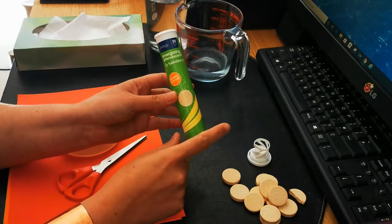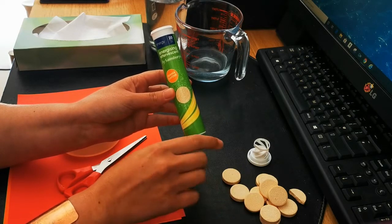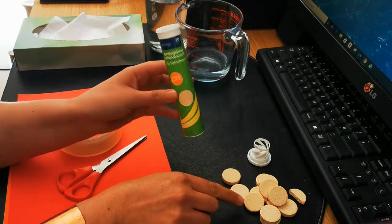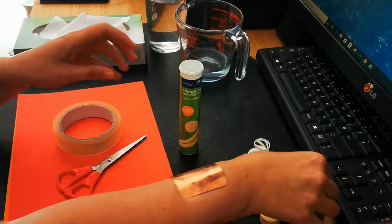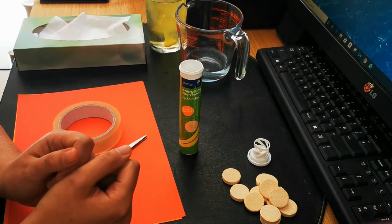So the first thing to do is to take the lid off and pour the tablets out. Put them to the side somewhere safe. You're going to be coming back to use those later. You may want to use one so you can put one into your drink, and save the rest for the rest of the experiment.